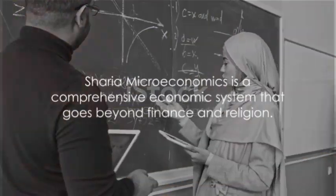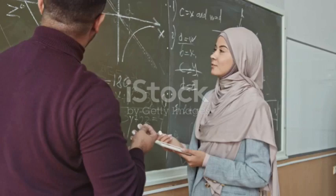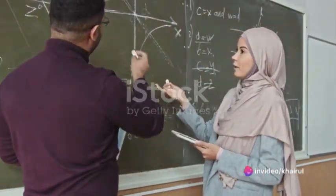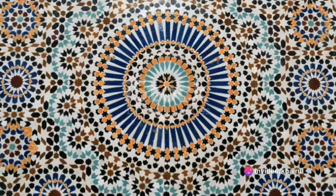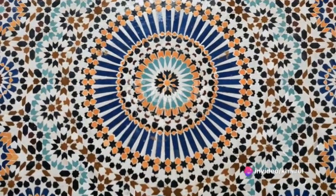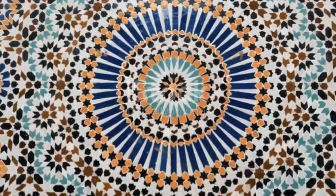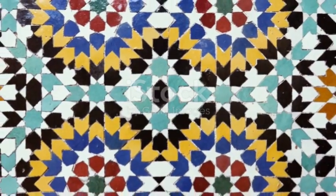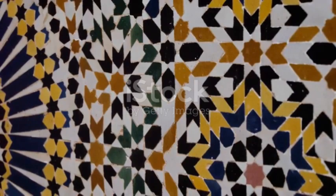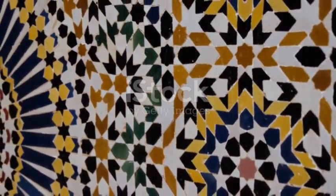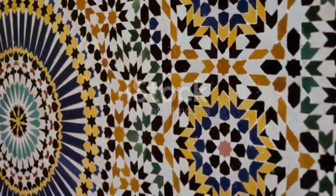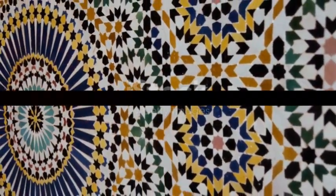As we wrap up, remember that Sharia microeconomics is not just about finance or religion. It's about a just and equitable economic system that strives to benefit all participants. It's a fascinating blend of faith and finance, offering insights that could reshape our understanding of economics. So the next time you think about economics, remember to consider the principles of Sharia microeconomics — it's a different lens through which to view the world of finance, one that could lead to a more equitable and sustainable economic future.